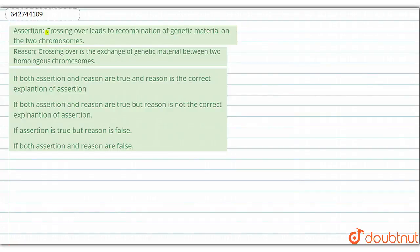Hello students. Our question is: Assertion - crossing over leads to recombination of genetic material on the two chromosomes. And the reason is - crossing over is the exchange of genetic material between two homologous chromosomes. In order to answer this question, first we need to understand what crossing over is.